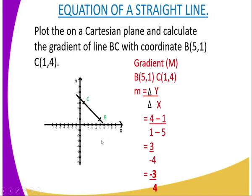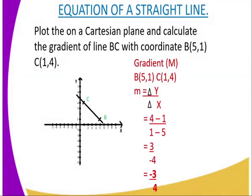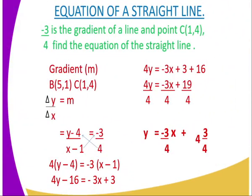Now for the equation of a straight line: having calculated the gradient as negative three-quarters, in order to find the equation you must use one of the coordinates. I have decided to use point C, which is (1, 4), for this calculation.